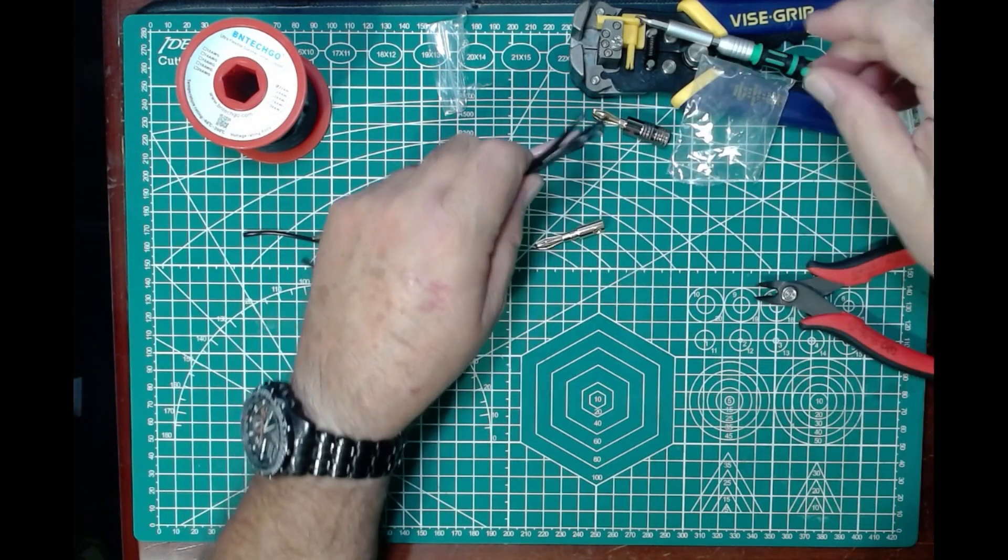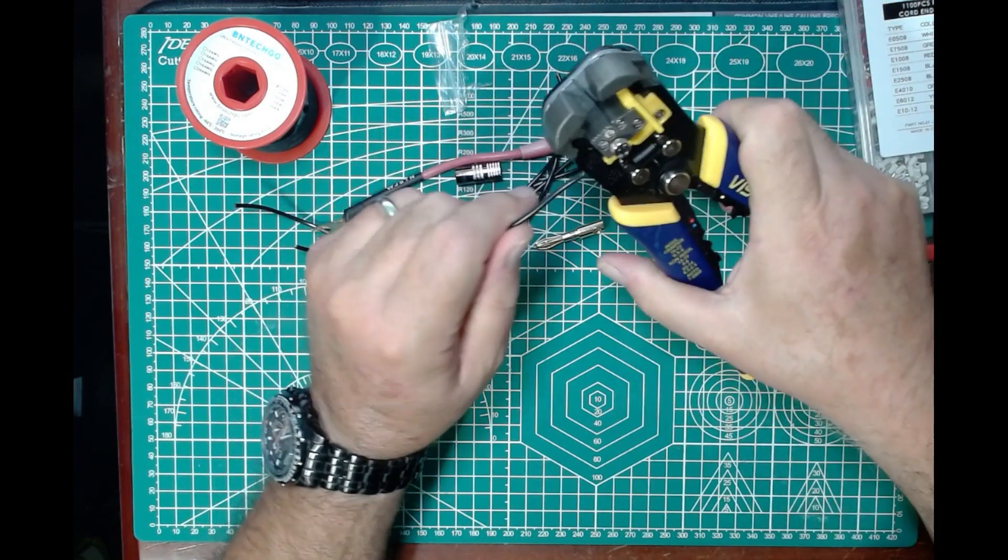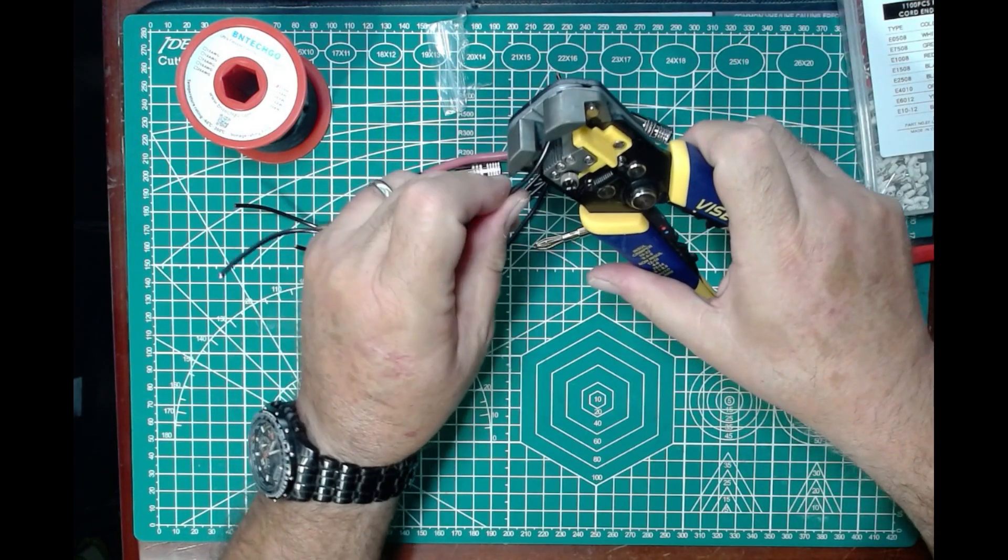So here is my fake bundle of radials at this point. And now what I'm going to do is I'm going to strip these back. And you don't have to be super scientific about this.